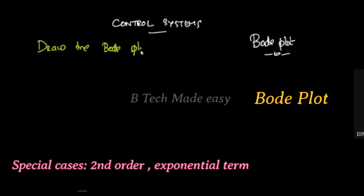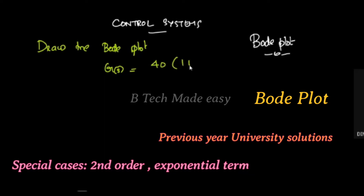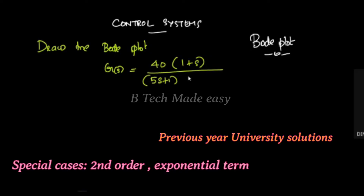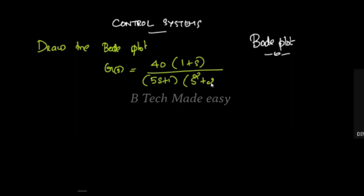Bode plot problem. The transfer function is G(s) = 40 into (1 + s) divided by (5s + 1) into (s² + 2s + 4). This is a second order system, which we have already studied.